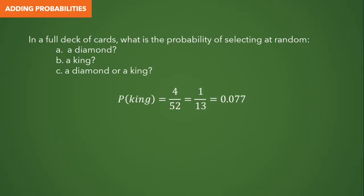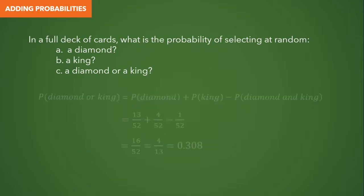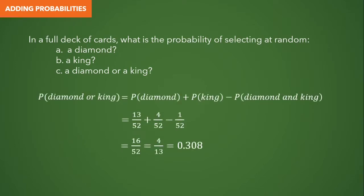For letter C — a diamond or a king — we know there can be a diamond card that is also a king, so these events are not mutually exclusive and we need to subtract their intersection. The probability of a diamond is 13/52, plus the probability of a king (4/52), minus the intersection (the king of diamonds = 1/52). That gives us 13 + 4 − 1 = 16 out of 52, so the probability of selecting a diamond or a king is 4/13 or approximately 0.308.